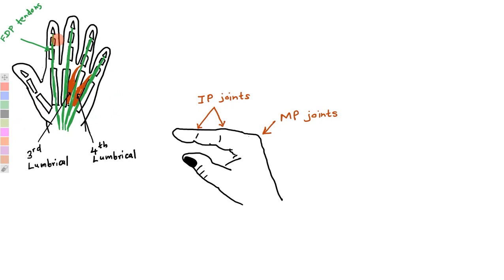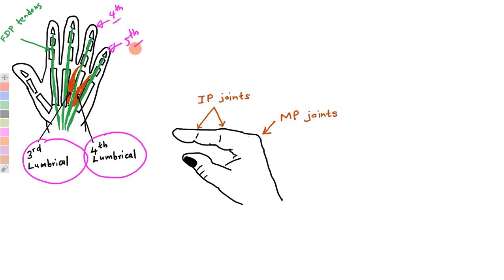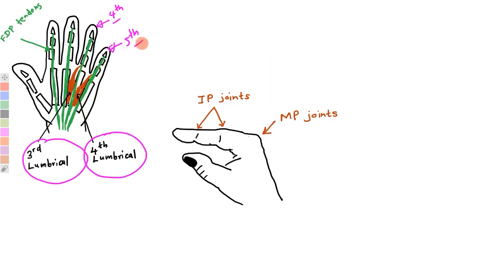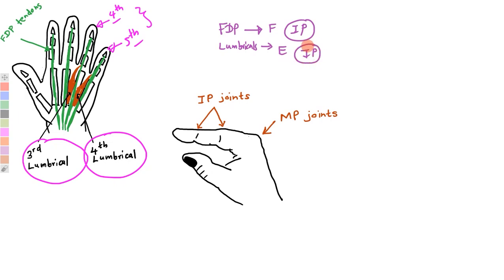In this image, the green flexor digitorum profundus tendons going to the fourth and fifth fingers, and the third and fourth lumbricals going to those same fingers, are all supplied by the ulnar nerve. When the ulnar nerve is damaged at a proximal point at the elbow, both these muscle groups are paralyzed. You already know that flexor digitorum profundus tendons flex the interphalangeal joints and lumbricals extend them. So when both are paralyzed, both flexion and extension of the interphalangeal joints will be impaired.